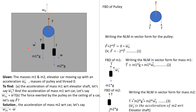W is the acceleration of mass M1 with respect to the car, meaning the person sitting inside the elevator car will see that M1 is moving upwards with an acceleration W. Since M1 is moving upwards with acceleration W, the same person will see that M2 is moving in the downward direction with acceleration W. T is the tension force in the thread.